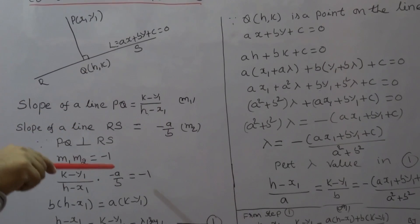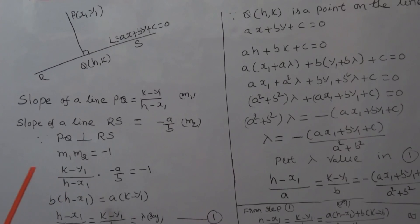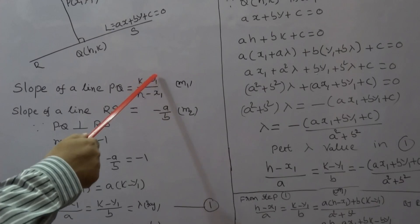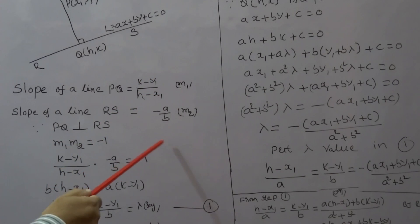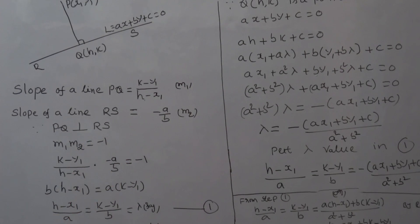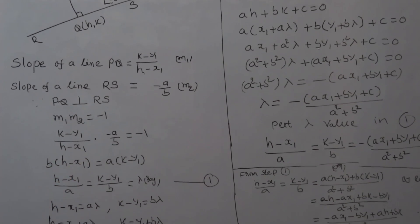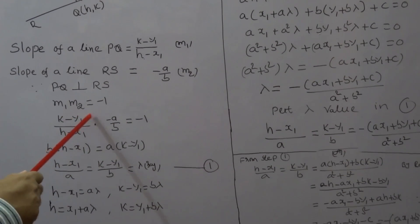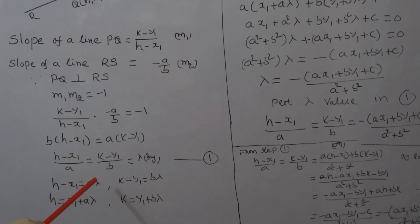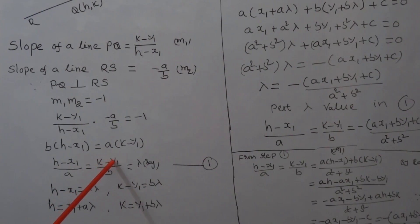Since these two lines are non-vertical and perpendicular, the product of the slopes is -1. Hence, M1 × M2 = -1. That is [(K - Y1) / (H - X1)] × (-A/B) = -1. The negatives cancel, giving B(H - X1) = A(K - Y1). Transposing B to the right side and A to the left side, we get (H - X1)/A = (K - Y1)/B.